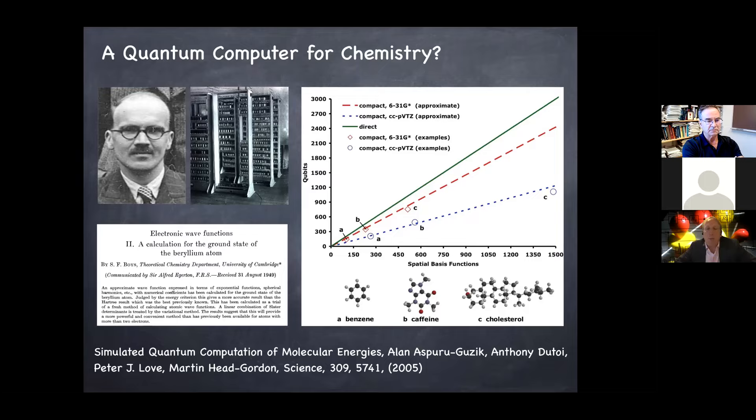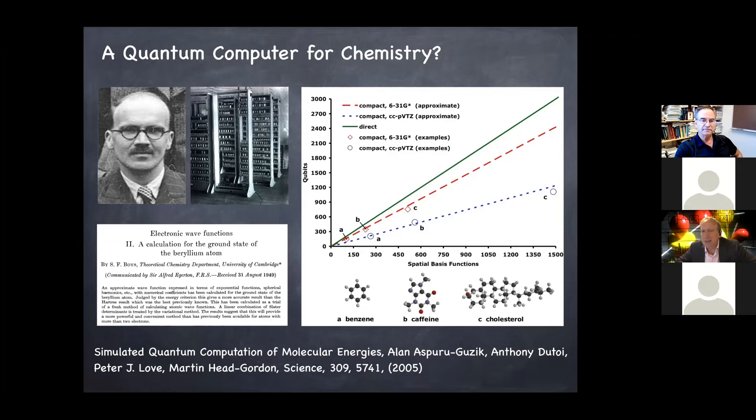So that was the start of a sort of journey that is ongoing. But I always like to invoke history here and look back to the classical use of classical computers in quantum chemistry. So here's a picture of S.F. Boys in Cambridge in 1950, and here's the paper where he's doing what was really, I think, the first full CI calculation for a beryllium atom. And that's the EDSAC vacuum tube computer. So really, we're in this era where we have these noisy unreliable machines. It feels very analogous to the vacuum tube era of classical computing.